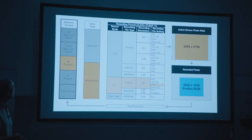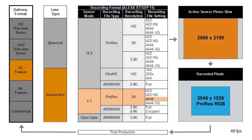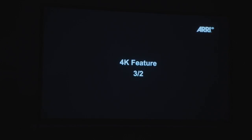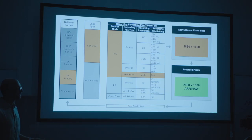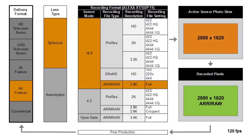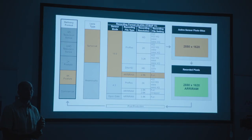People also use 4x3 ProRes 2K 4:4:4 for anamorphic features. Now moving to 4K features — the first workflow is identical to the 2K feature approach: shoot spherical 16x9 ARRI RAW 2.8K, record those pixels into the ARRI RAW file, go into post and blow it up to 4K. It looks spectacular. The latest Bond, Skyfall, was done that way — they even did an IMAX version. A lot of movies are being done this way currently.